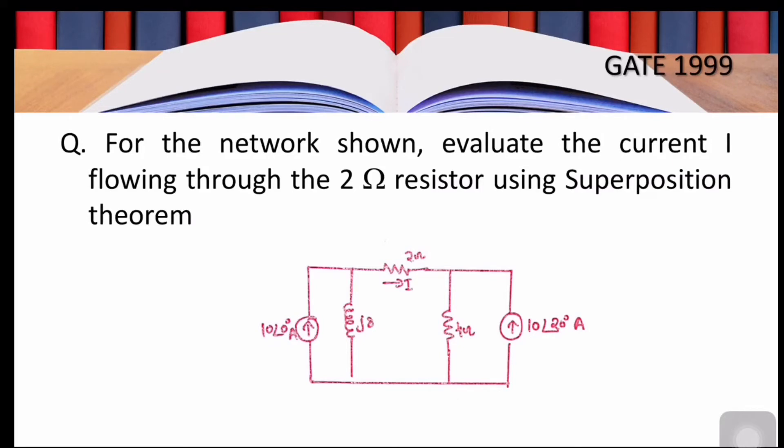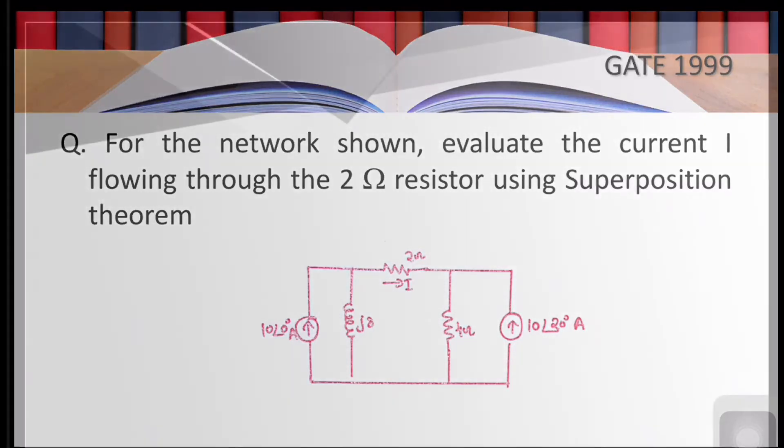The topic of frequency domain analysis of networks is broad, so here we will discuss only the part required to solve this particular question. In frequency domain analysis, we have a concept called impedance, which is a generalized circuit element that can represent a resistor, capacitor, or inductor. Impedance is a vector quantity with both magnitude and direction, and it depends on frequency.